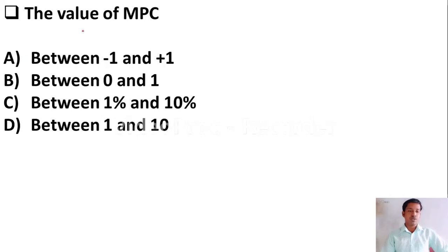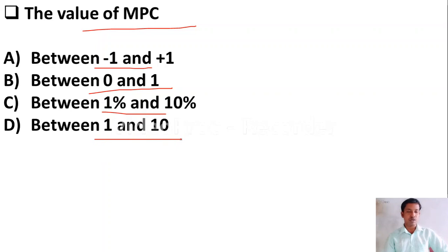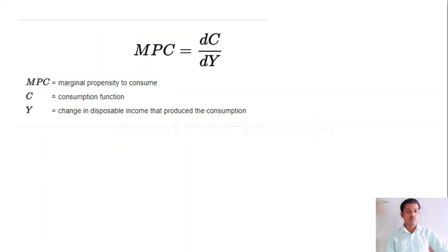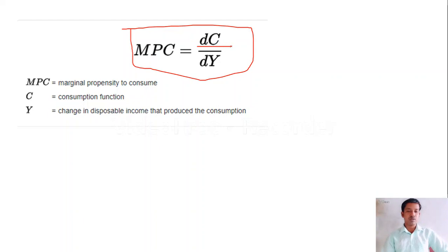The value of MPC: Option A — between minus 1 and plus 1; Option B — between 0 and 1; Option C — between 1% and 10%; Option D — between 1 and 10. The value of MPC is always between 0 and 1, so Option B is the correct answer. Please remember: MPC value always lies between 0 and 1. The formula to calculate MPC: MPC equals marginal propensity to consume equals change in consumption divided by change in income, where C means consumption, Y means income, and D means change.